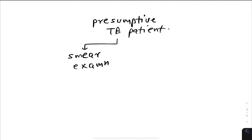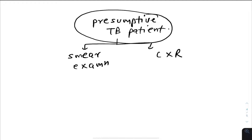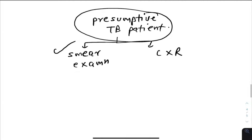You can also go for a chest X-ray. If someone asks what is done first for a presumptive TB patient, the answer is smear examination. From these two investigations — smear and chest X-ray — four different probable outcomes come out.